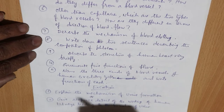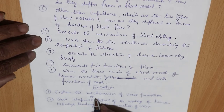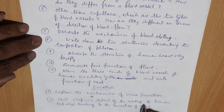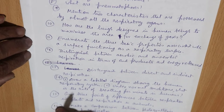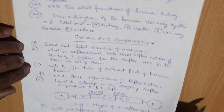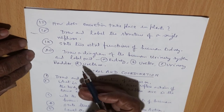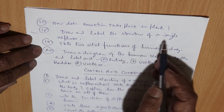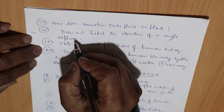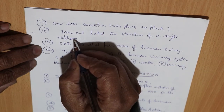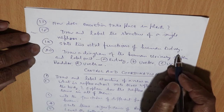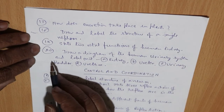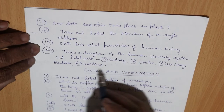Excretion chapter: explain the mechanism of urine formation, or give a stepwise detail of working of human kidneys leading to the formation of urine. How does excretion take place in plants? Draw and label the structure of a single nephron — the structural and functional unit of the kidney. State the two vital functions of the human kidney. Draw a diagram of the human urinary system and label the kidney, ureter, urinary bladder, and urethra.